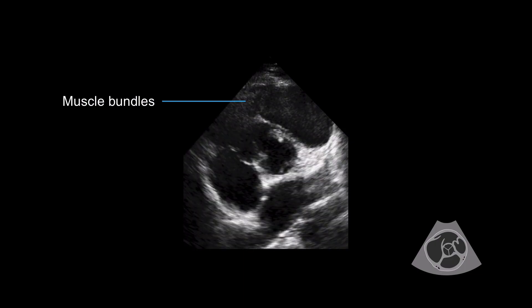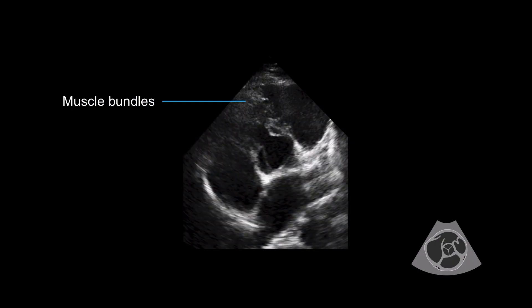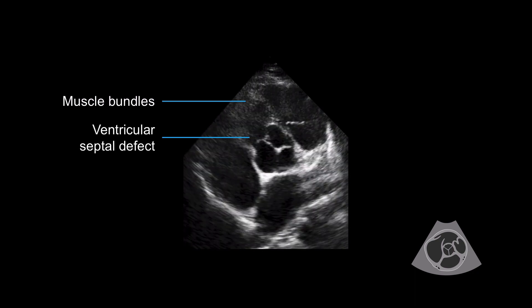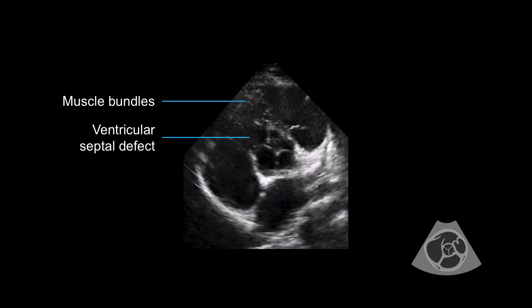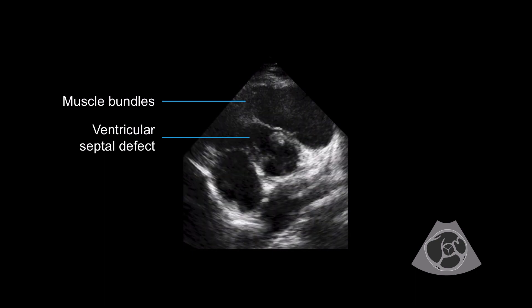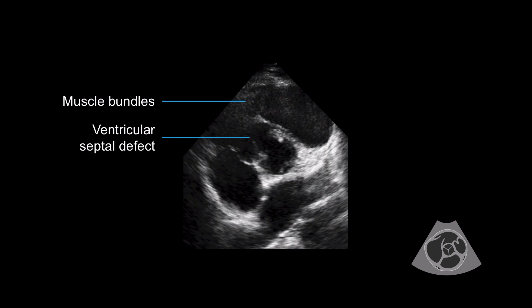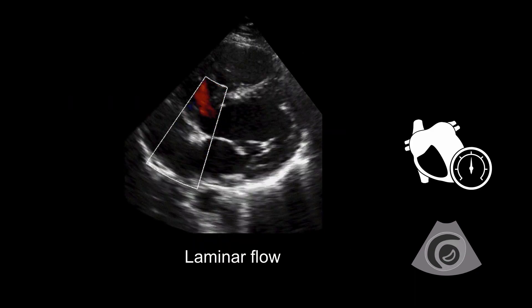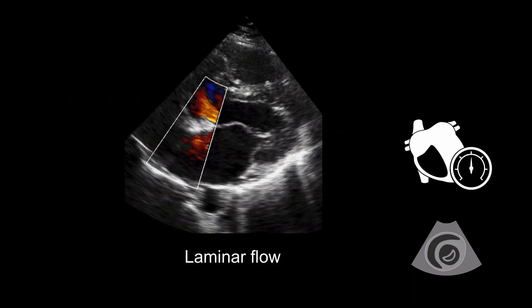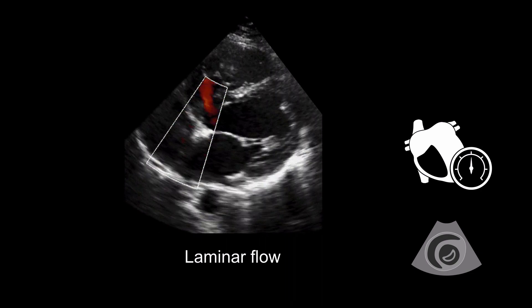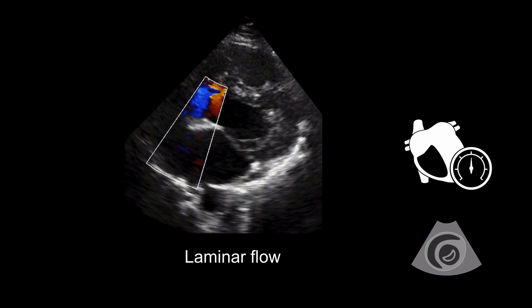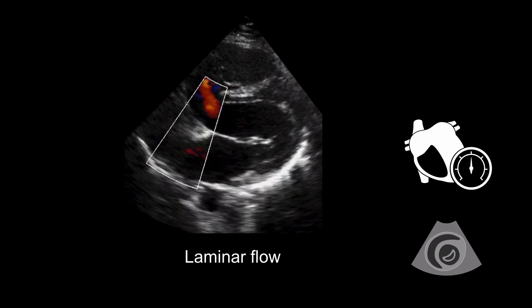On 2D imaging we can see the muscle bundles obliterating the outflow. Notice the ventricular septal defect — it enters into the right ventricle before the bundles, so entering the high pressure chamber, we can expect that it will be a low velocity. Here we see the red color flow across the ventricular septal defect but it doesn't look turbulent like VSD jets normally do. It's quite laminar, suggesting that the right ventricular pressure is high.